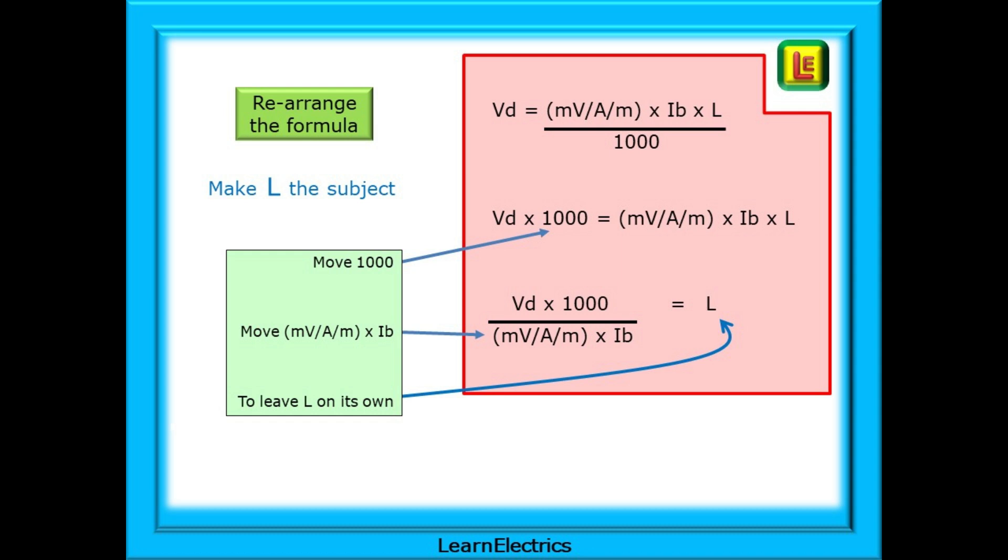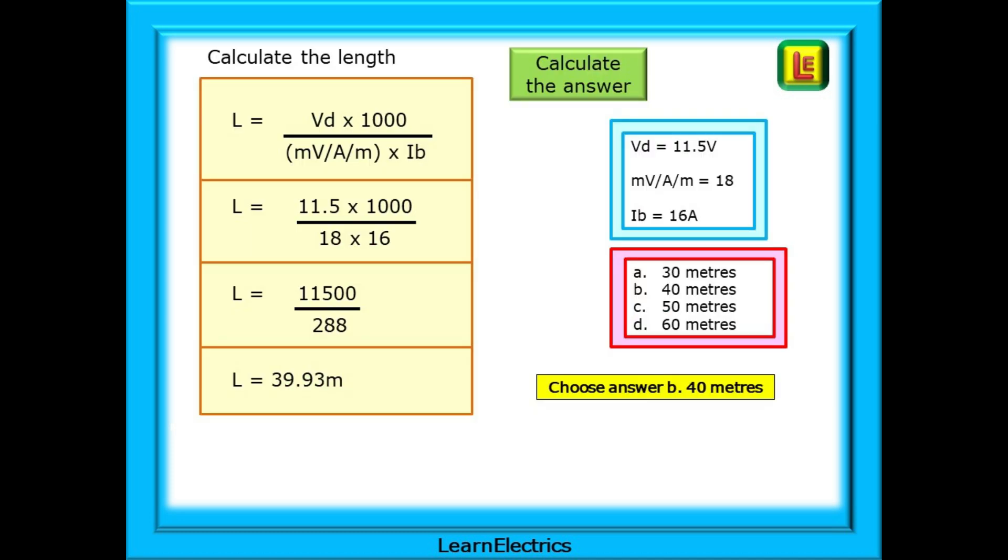And here is our very easy transposition. Move the 1000 from the bottom right to the top left. Then move MVAM and IB from the top right to the bottom left. This now leaves L on its own. And that is how easy it is to rearrange the voltage drop formula. Now put in the numbers given in the blue box. Follow the working out in the yellow box and you should arrive at an answer of about 39.93 meters. Your answer might vary by a tiny amount depending on the rounding off, but it will always be very obvious which is the most appropriate answer. And for us, 39.93 is so very close to 40 meters that answer B has to be the correct choice.